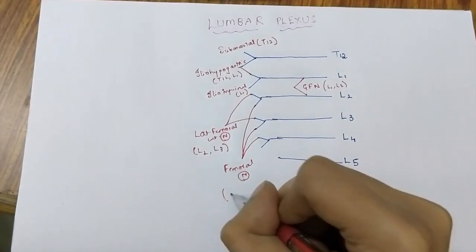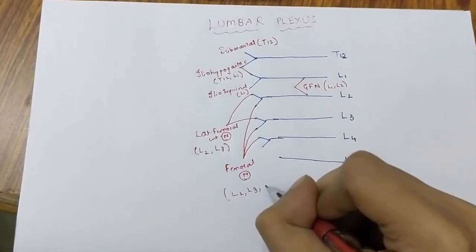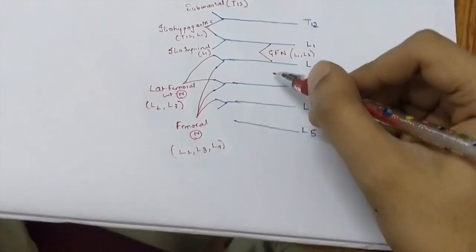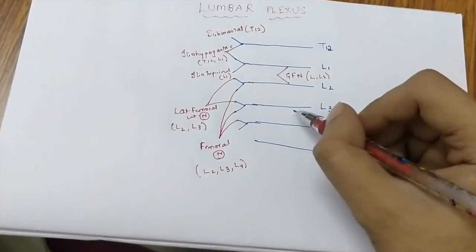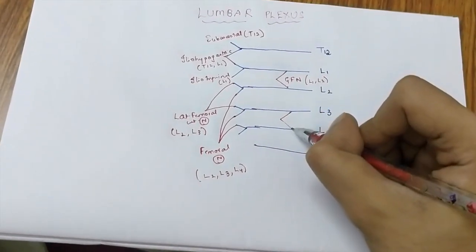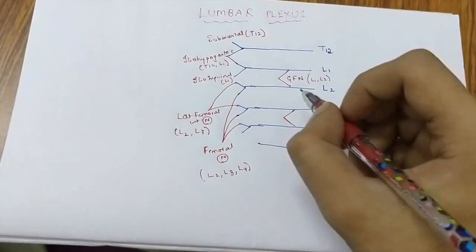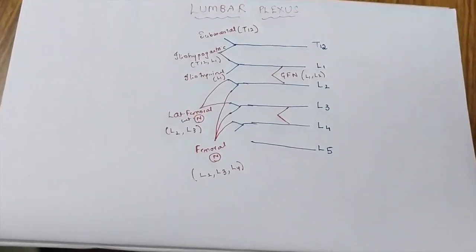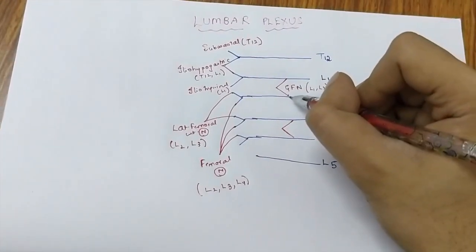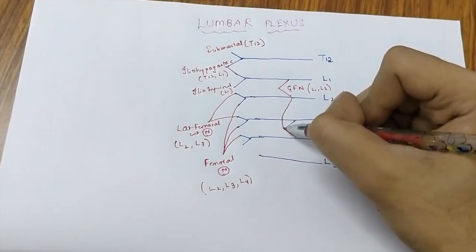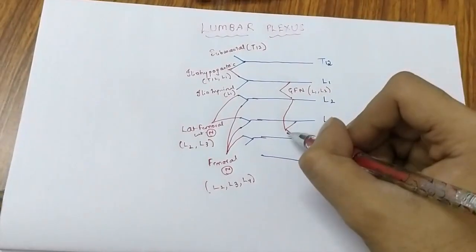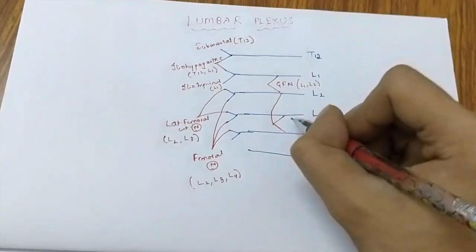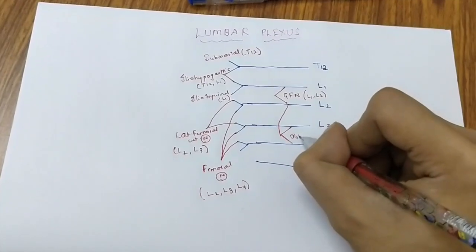The femoral nerve is L2, L3 and L4. Leave a space between L3 and L4 and then create an arrowhead. Add one from L2 to this. This is slightly different to all the others, and this forms the obturator nerve.